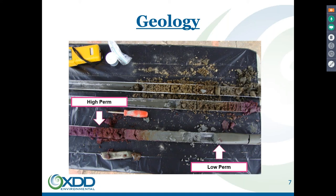What you're looking at here are cores from a remediation site post-injection of permanganate. You're seeing the pink-purple color associated with permanganate — one of the nice things about permanganate chemistry is you can visually see it in your cores and wells. This shows that in the sandier and silty-sandy material above the clay, there was good distribution of the reagent to destroy the chlorinated solvent contaminants, and it was very effective.